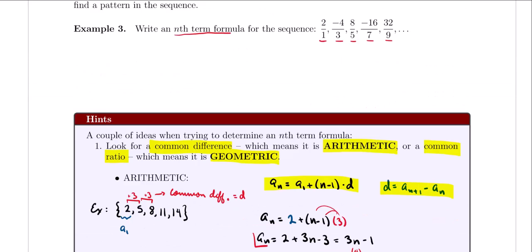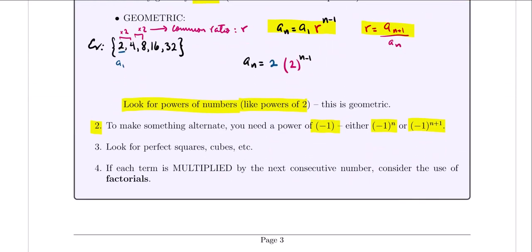Another hint: it's sometimes helpful to look for perfect squares or perfect cubes. For example, given 1, 8, 27, 64 — notice these are 1 cubed, 2 cubed, 3 cubed, and so on — so the formula is n cubed. And the last hint: if each term is multiplied by the next consecutive number, you might want to consider using factorials.